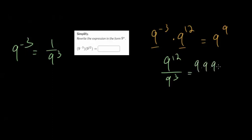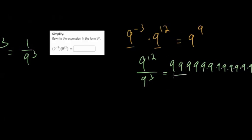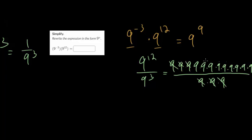In the numerator, you would have 12 of these multiplied together, and in the denominator, you would have 3 of them multiplied together. So 3 from the top and the bottom would cancel each other out. And if you counted them up, you would have 9 left up top. So 9 to the 9th would be your final answer.